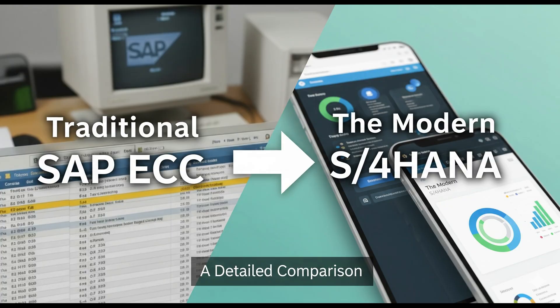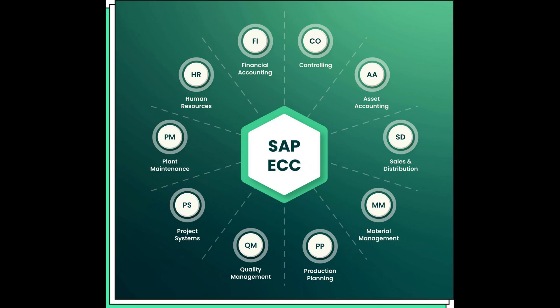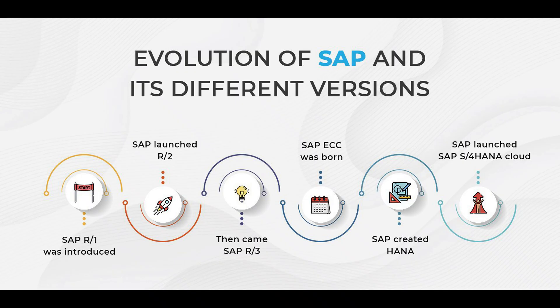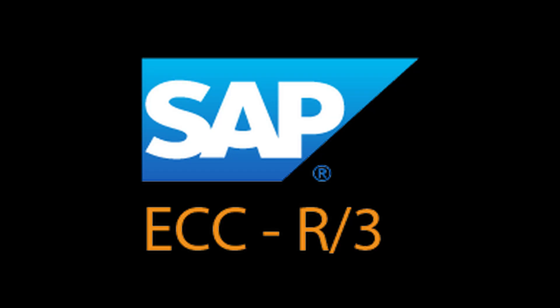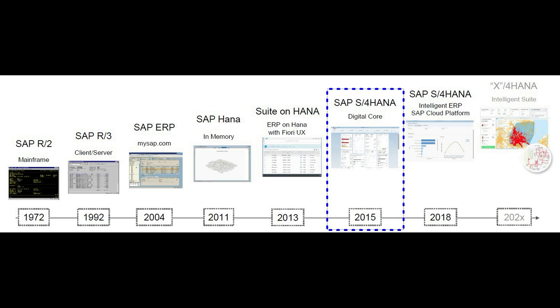Welcome back to Code One Digest. Today we will see the difference between SAP ECC and SAP S4 HANA. SAP ECC is the older version of SAP R3, launched way back in 1992. ECC stands for Enterprise Resource Planning Central Component. R3 stands for real-time data processing for three-tier architecture.